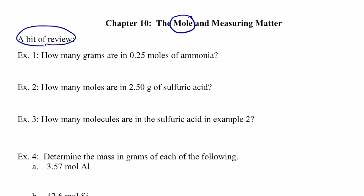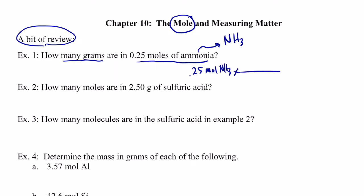Let's do a few examples together. If I have 0.25 moles of ammonia, how many grams of ammonia do I have? We need to know how to write the formula for ammonia. Ammonia is the common name for nitrogen trihydride, so the formula is NH₃.